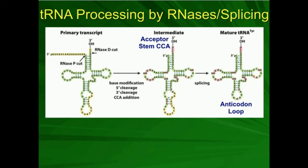In the primary transcript, we have parts in yellow which are not needed. For example, this leader sequence on the 5' end in yellow does not need to be there. An enzyme called RNaseP is going to slice off that useless leader sequence fragment. We also have two nucleotides - U and U - that are not needed, so we're going to cut those off too. That's called the 3' cleavage. If we were to cut off that UU, the terminal 3' nucleotide should be an A.